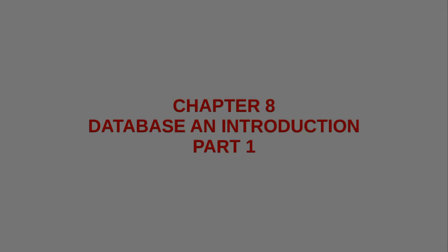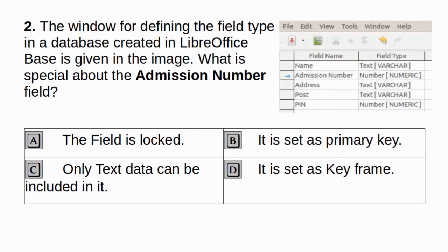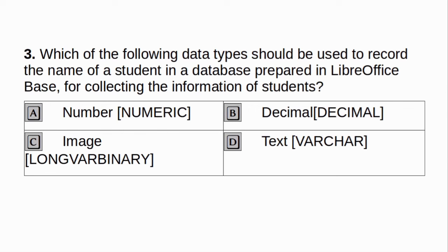Chapter 8: Database and Introduction, Part 1. Which of the following is a technique available in a database management system? A. Tweening. B. Cropping. C. Forms. D. Loop. Answer: C. Forms. The window for defining the field type in a database created in LibreOffice Base is given in the image. What is special about the admission number field? A. The field is locked. B. It is set as primary key. C. Only text data can be included in it. D. It is set as key frame. Answer: B. It is set as primary key.